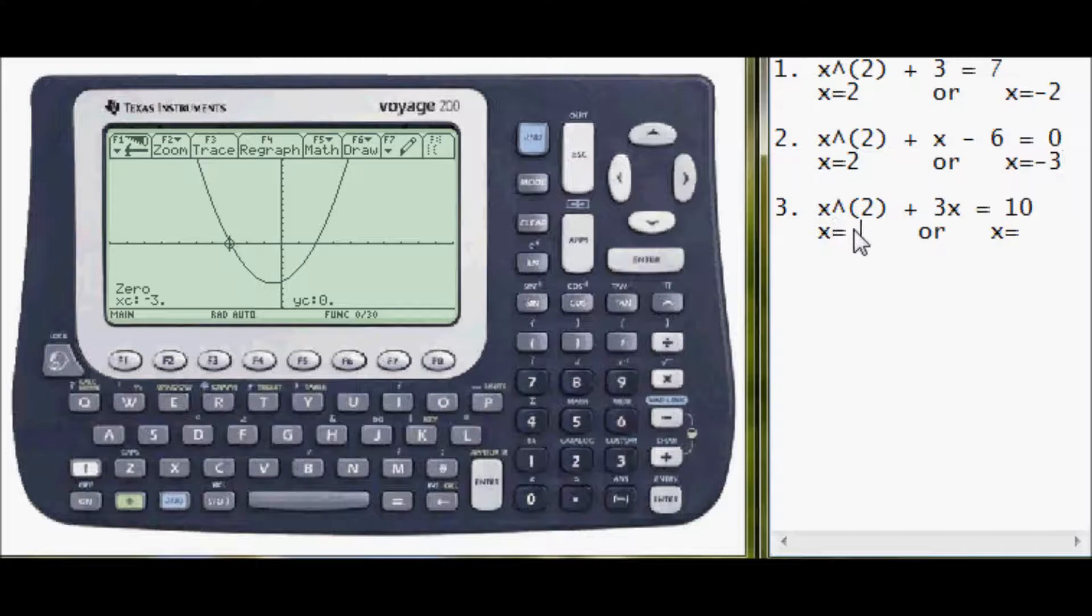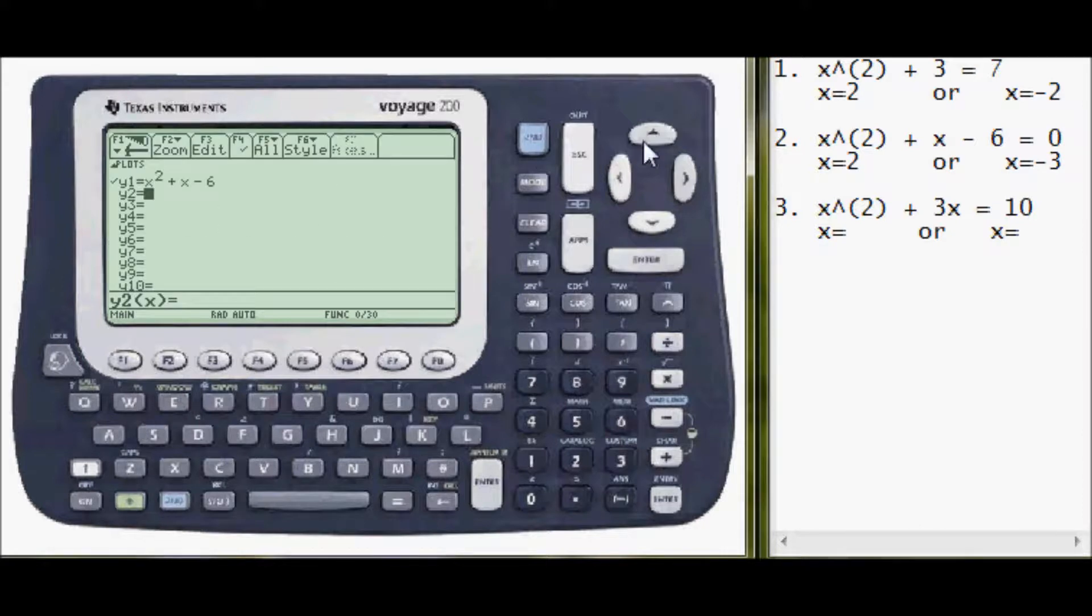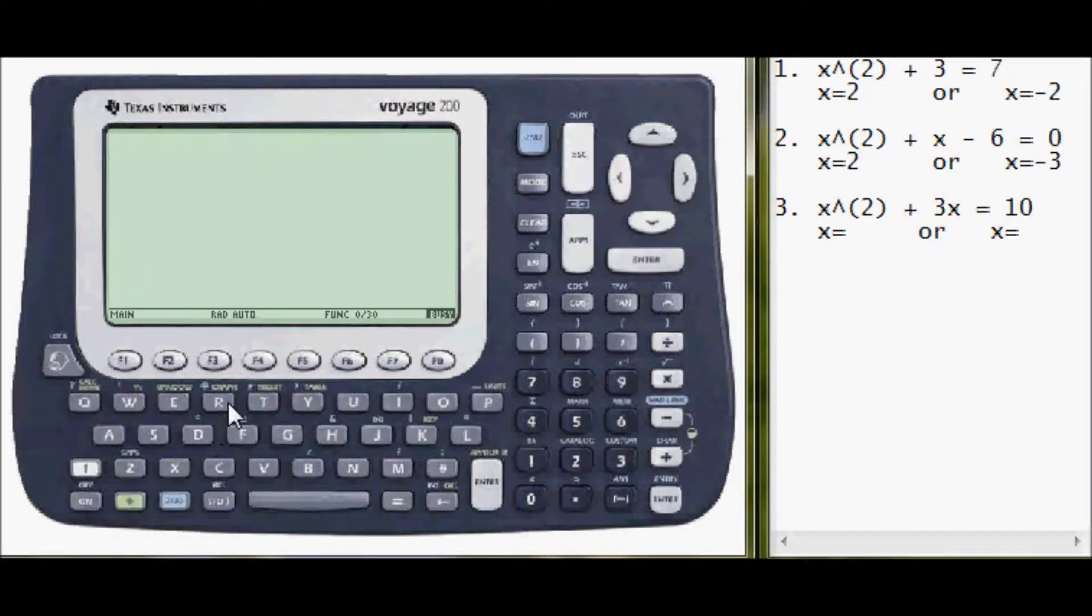Okay, let's do one last one. So I'll go back to y equals by pressing green diamond key and then w. Okay, I'll clear this out. Last one. X squared, x carat squared, plus 3x. Enter. And now the second half y2 is 10. Enter. And now I'll graph this. Green diamond key and the letter R.